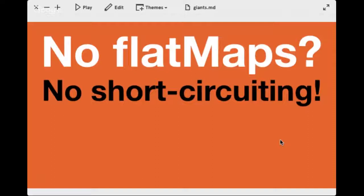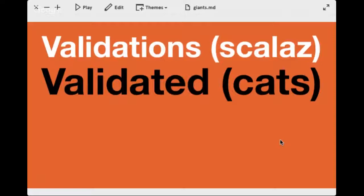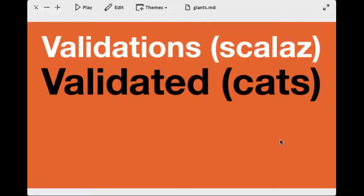Now we jump to what I consider the killer app of applicative functors, which ties back to our original example — and those are Validations, or Validated if you're using Cats. In addition to our mean function, let's add a square root function. We only want to handle real numbers, so if the input is less than zero we return an error; otherwise we return the square root of n.